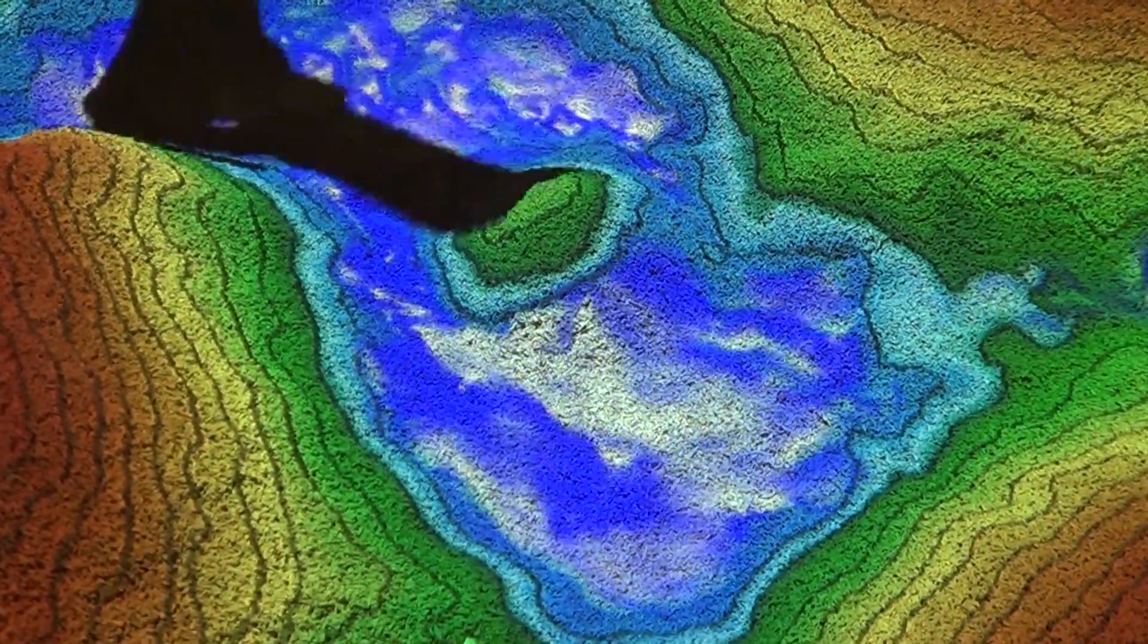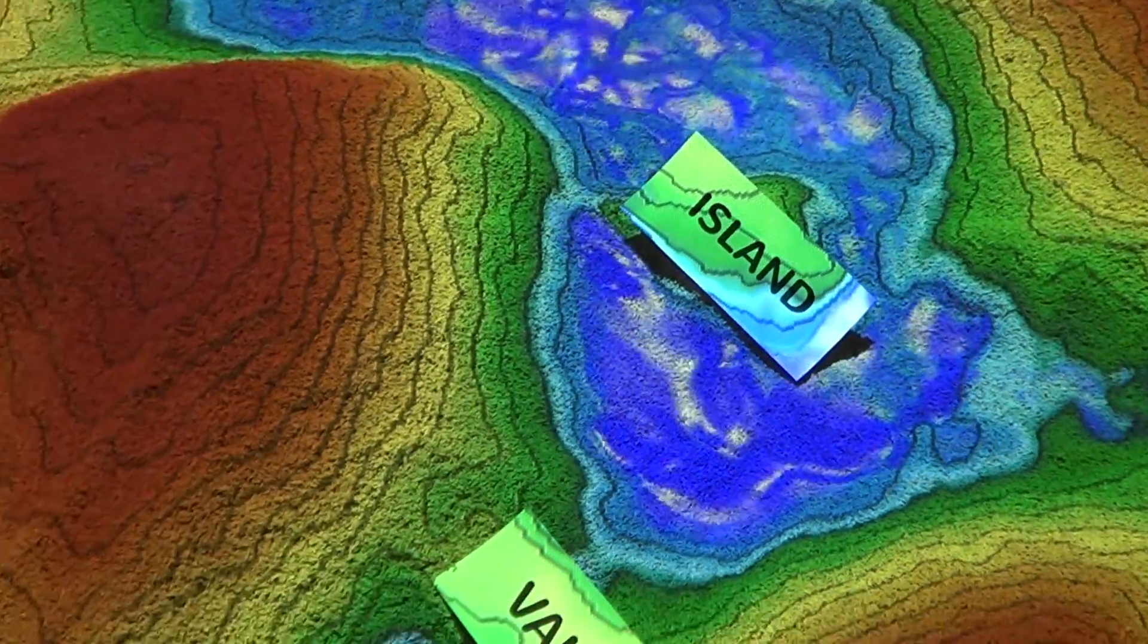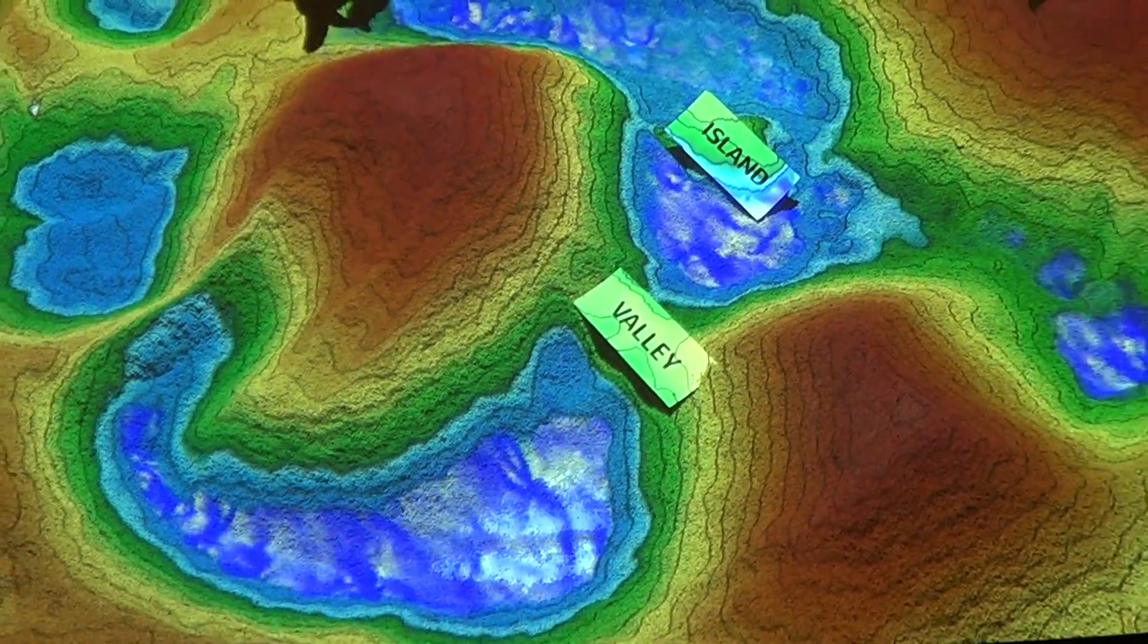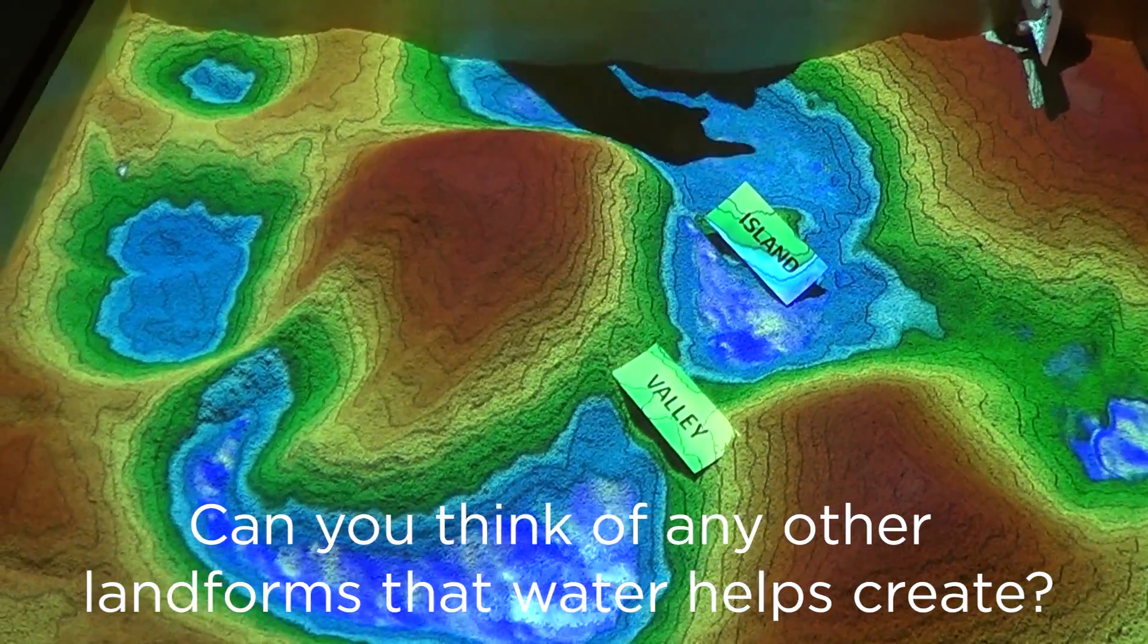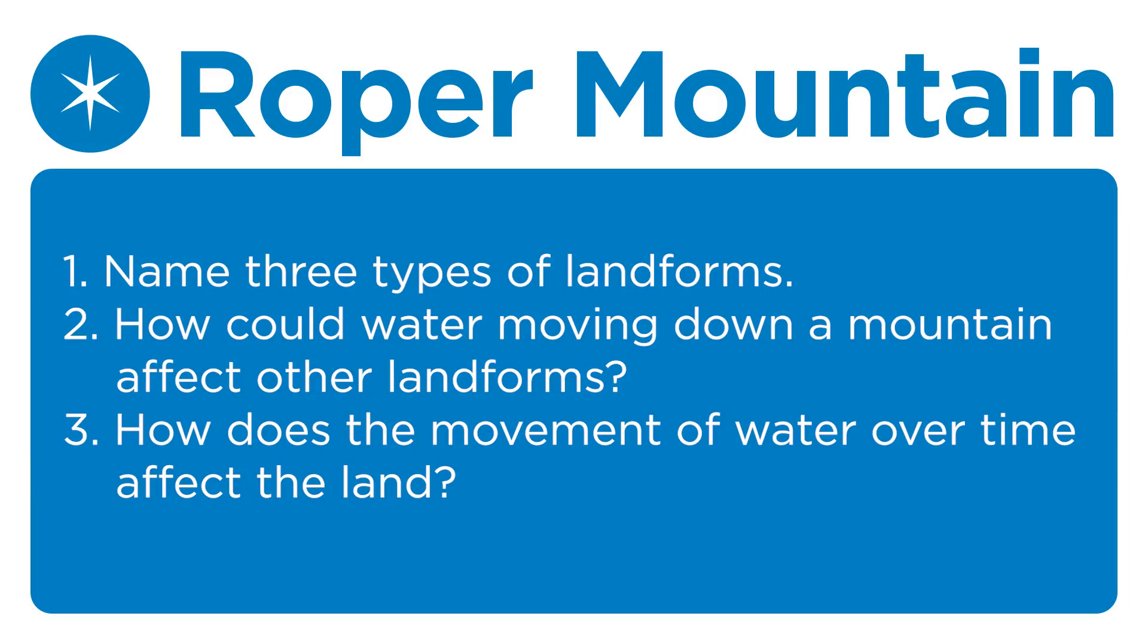So now we've covered most of the basics of all of our continental landforms. And we've kind of also looked at how water can shape the land. Can you think of any other landforms that water helps create?